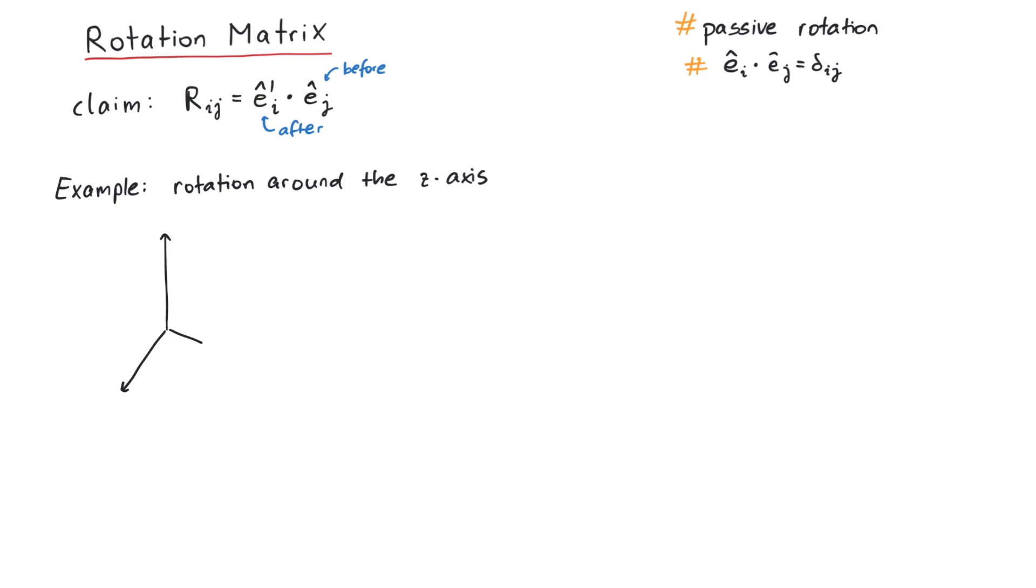We draw the old coordinate system in black, and the new, rotated one in red. As you can see from this figure, the new basis vectors are related to the old ones via some sine and cosine functions.